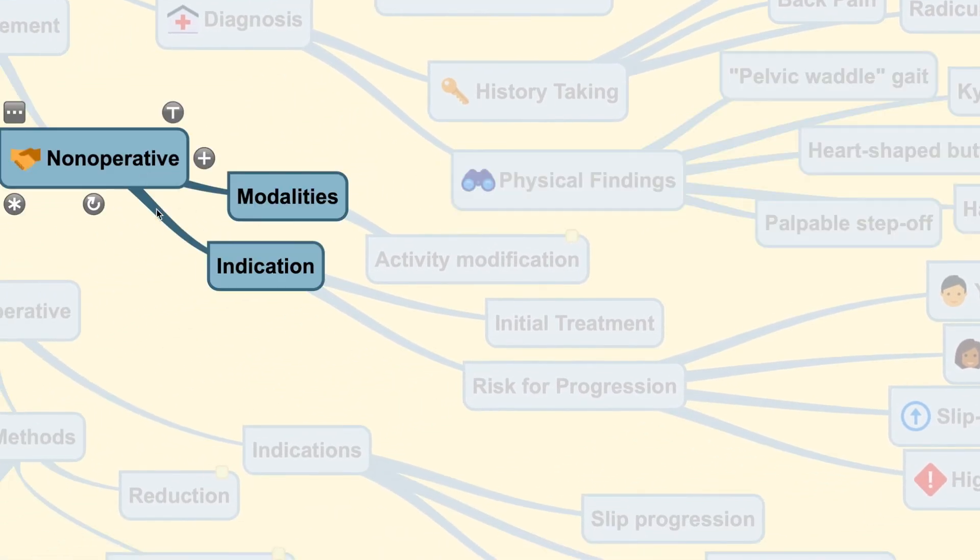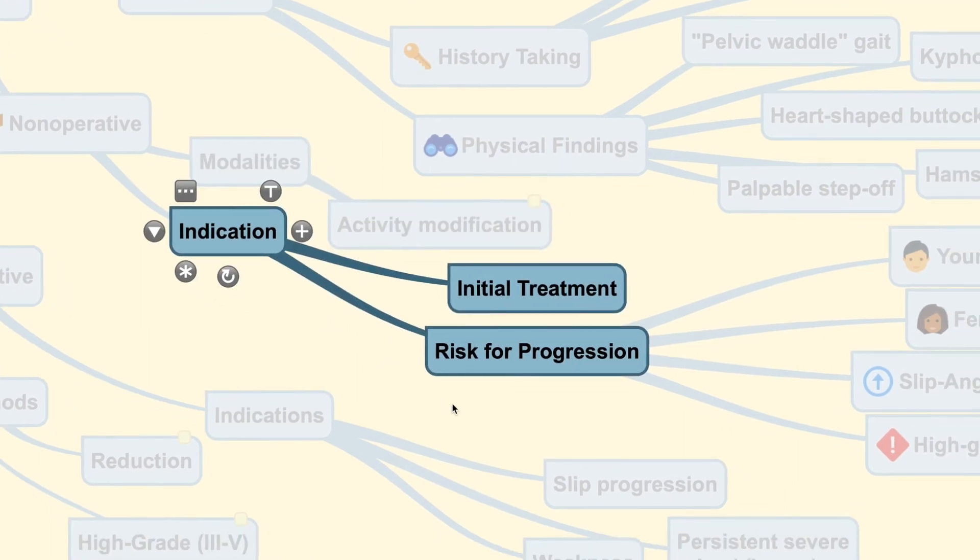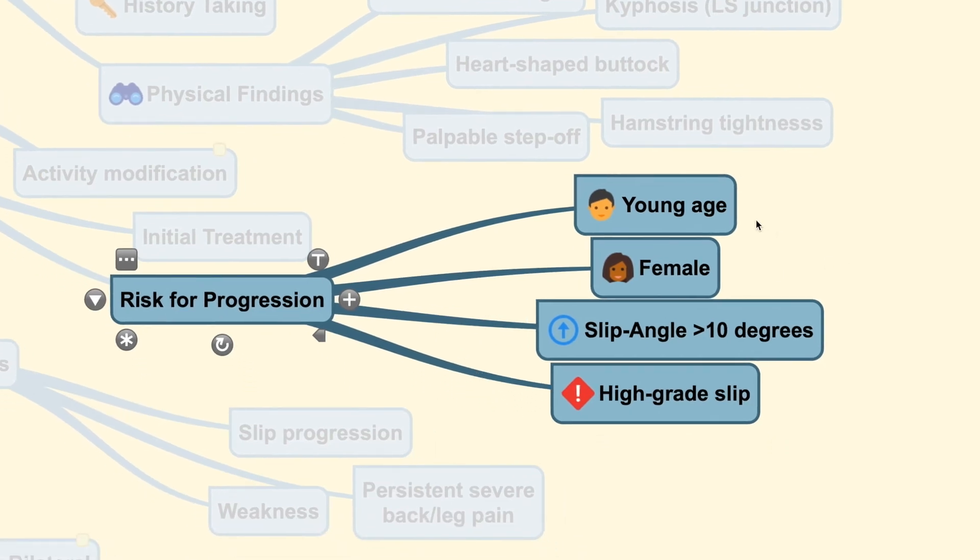Now for the treatment of these conditions, usually we focus more on non-operative because these patients once again are in a very young age and therefore the first step would be non-operative. Activity modification can be advised. For the grade 1 slippage under 25%, the patient may usually return to normal activities such as contact sports once the patient is asymptomatic. While in a higher grade slip such as the grade 2 slip, activities should be restricted. Now this is indicated in all grades of condition as an initial treatment but there are certain risks for progression of this condition which include younger age, female patient, slip angle more than 10 degrees and in cases with higher grade slip.